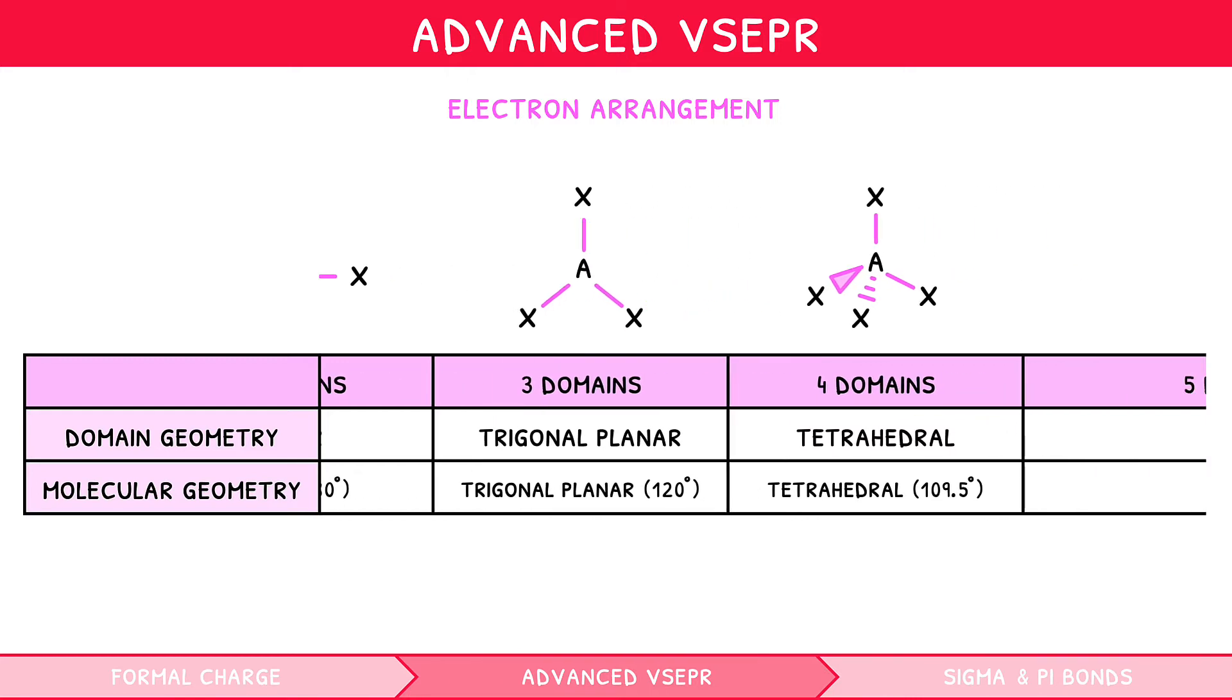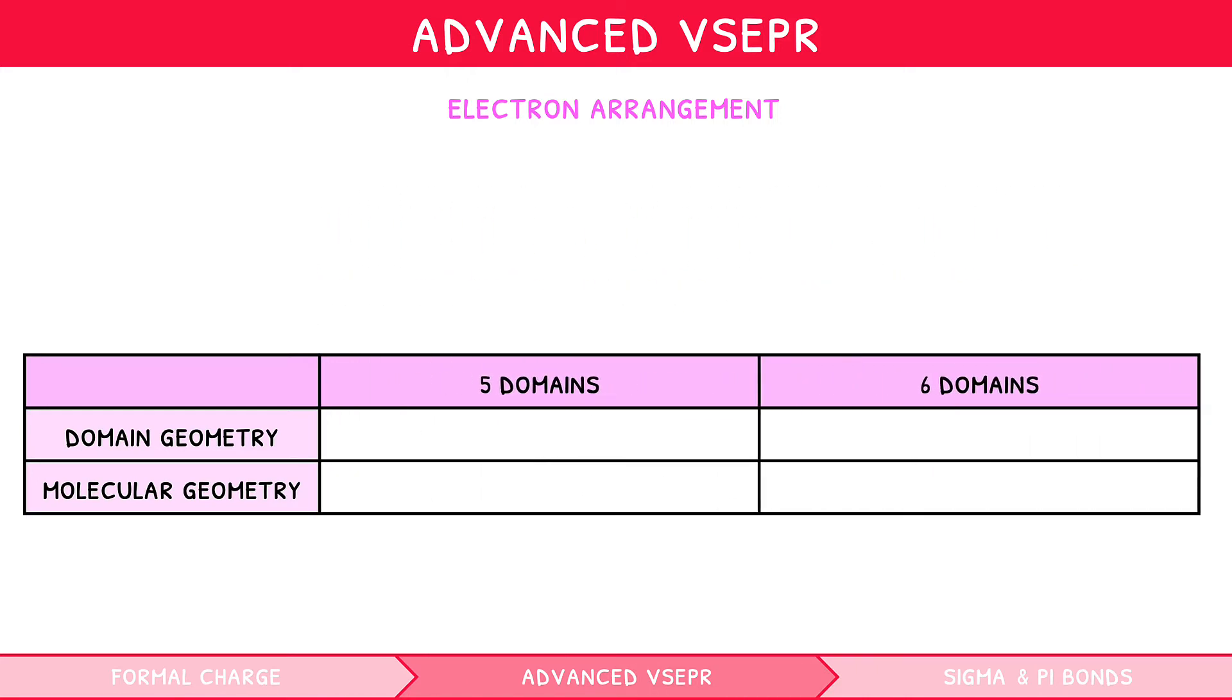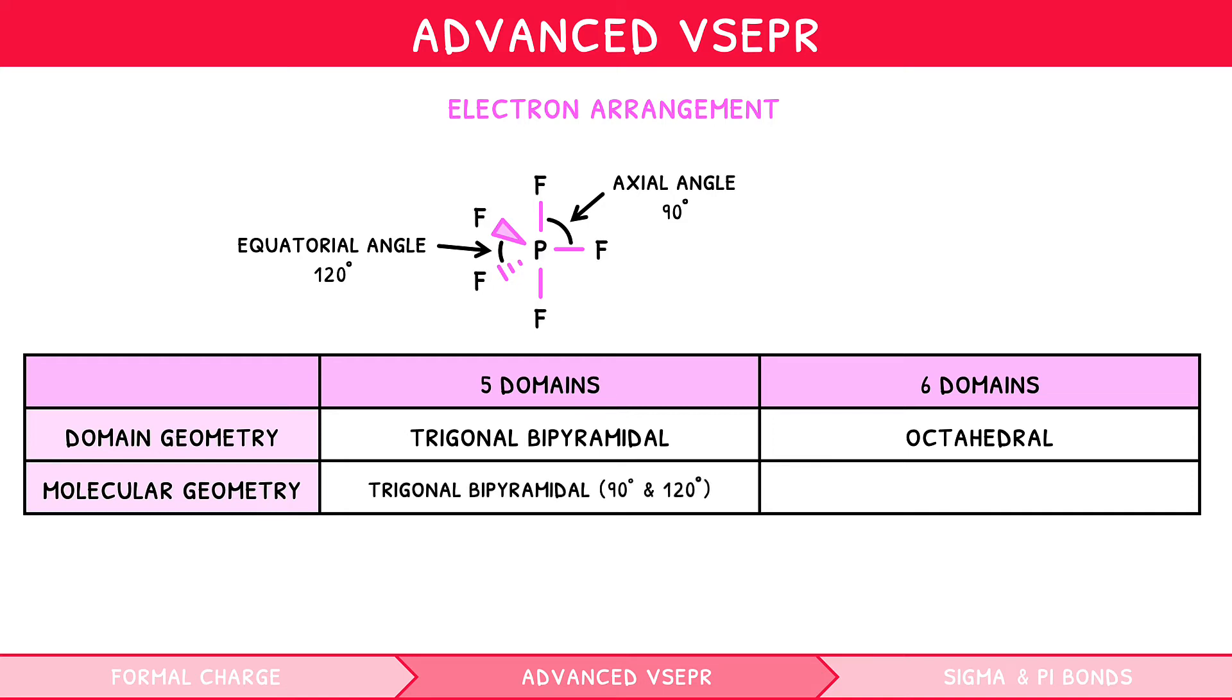We can thus add an additional 2 rows to our table for 5 and 6 electron domains. The shapes created are trigonal bipyramidal and octahedral. For trigonal bipyramidal, the electron domains form a pyramid shape. As a result, there are two bond angles. The first is known as the axial angle, which is 90 degrees, and the second is known as the equatorial angle, which is 120 degrees, for example, PF5.